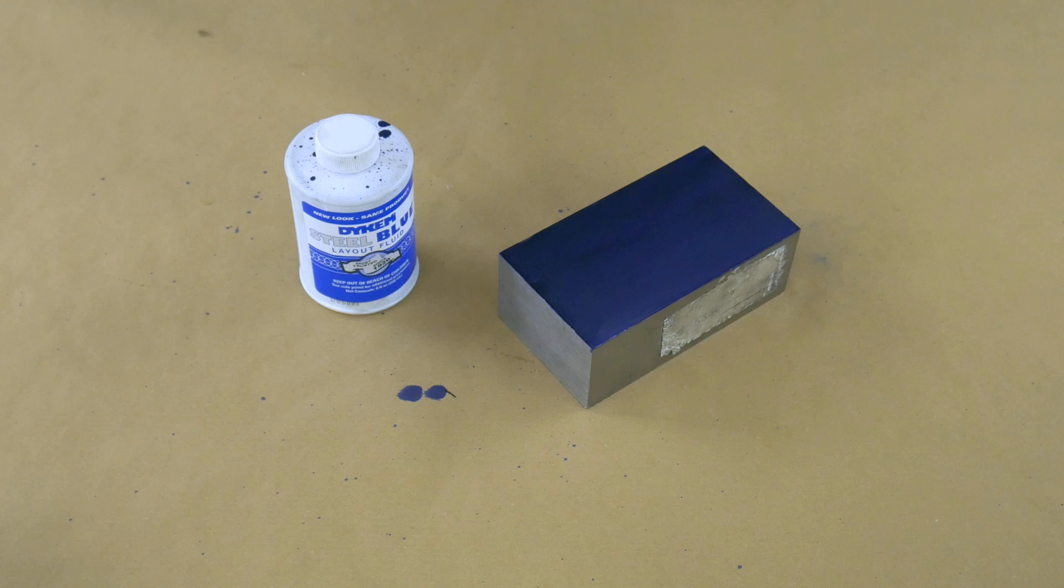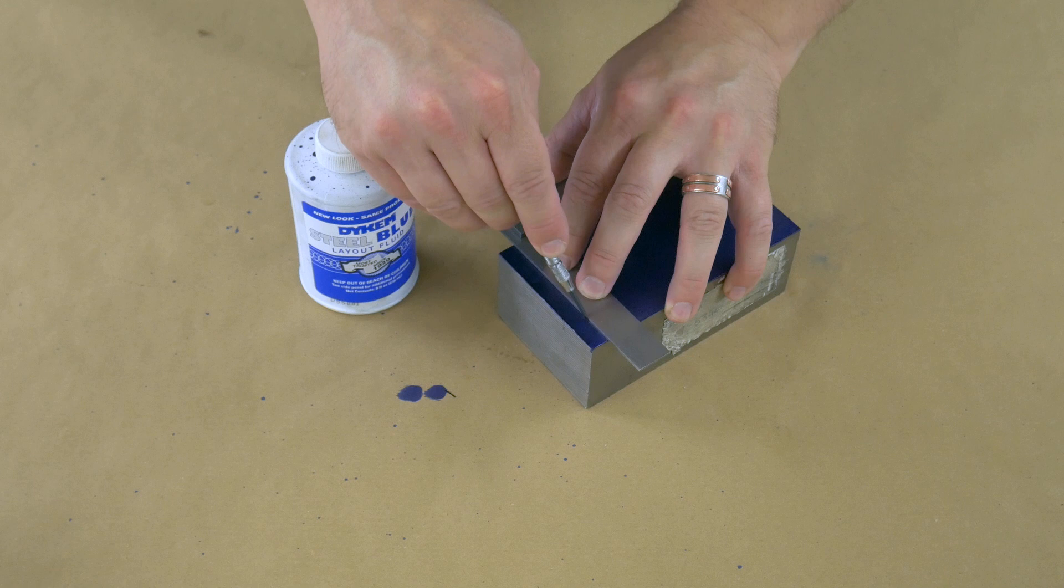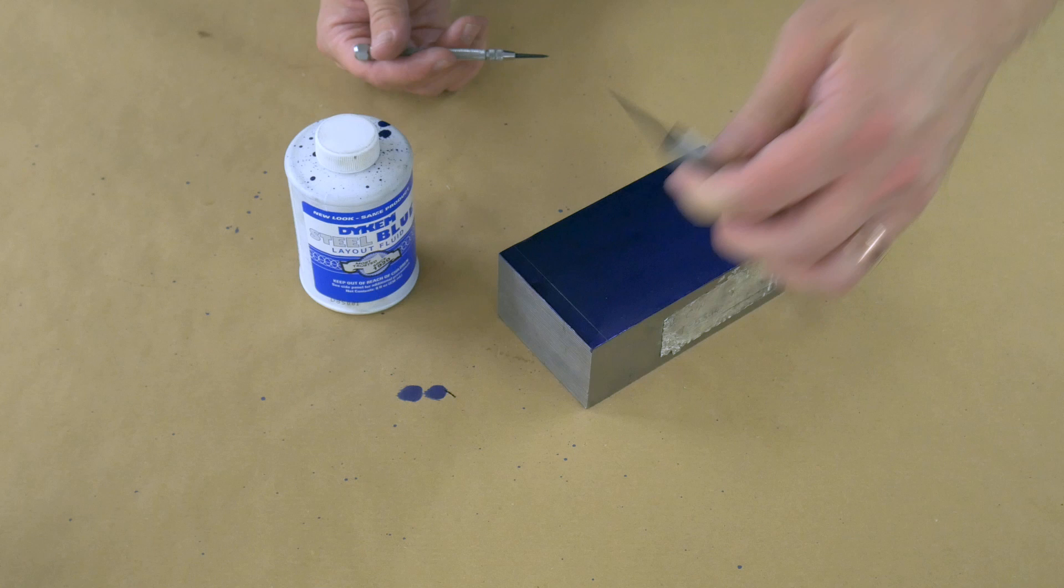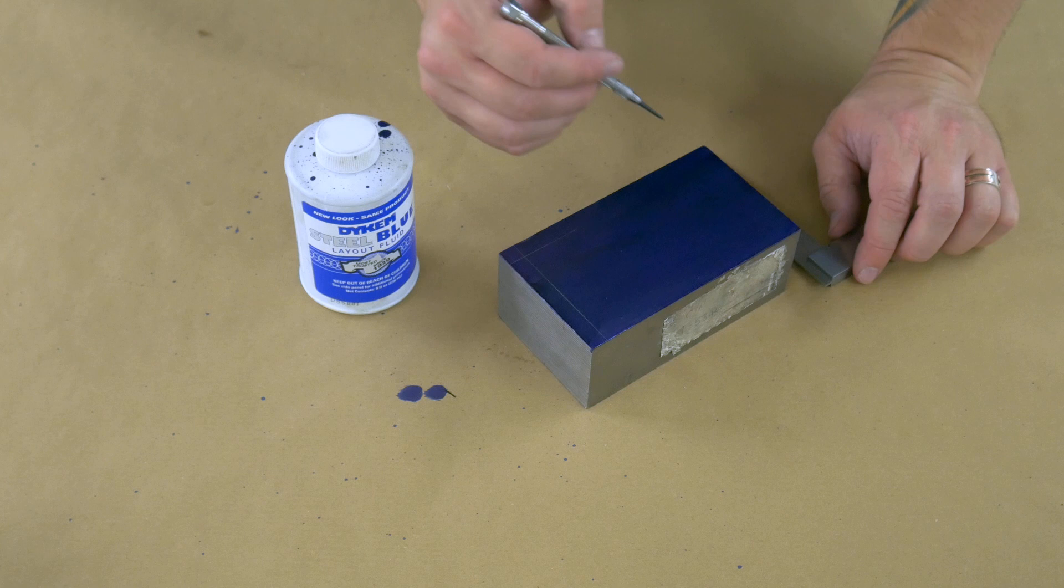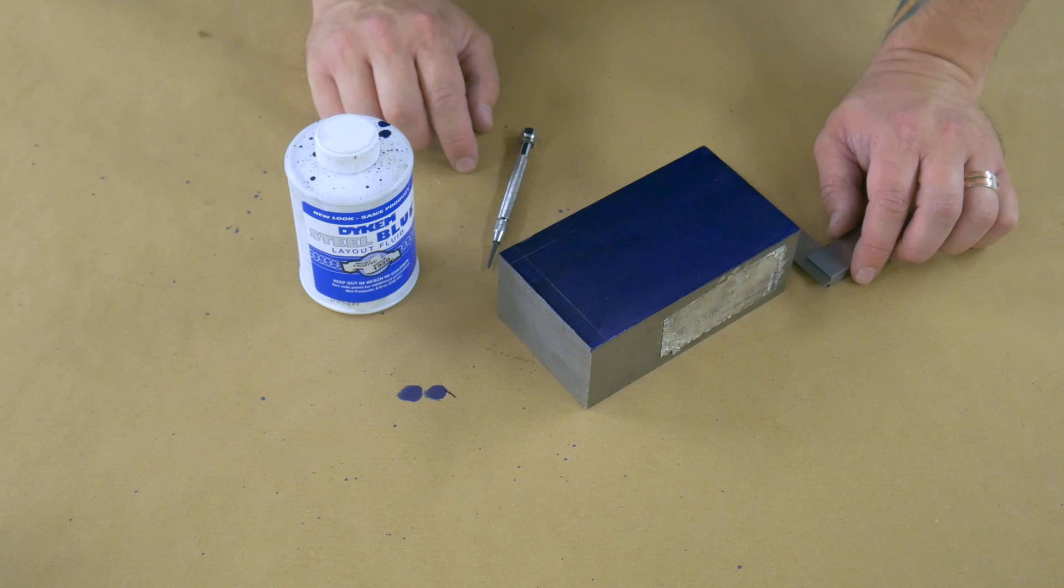Hopefully now this is nice and dry. Yeah, it feels pretty dry. And you can scribe in whatever you need. So you can take something like a square and a scribe, and you should get a nice crisp line. You can obviously mark out hole centers and things like that. I suppose if you had curves and whatnot, you could just take perhaps a compass or a protractor or something and draw around it. But it really is as simple as that. It just makes marking up metal fairly easy.